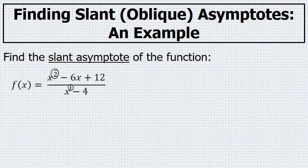To find that slant asymptote, we'll perform a division. We're going to have to take x squared minus 6x plus 12 divided by x minus 4. We'll perform this division using synthetic division.